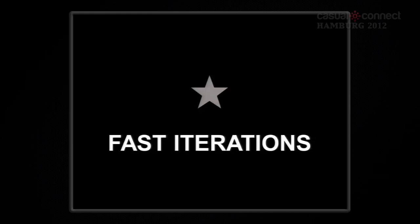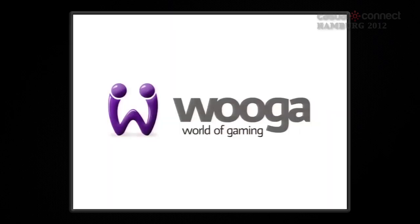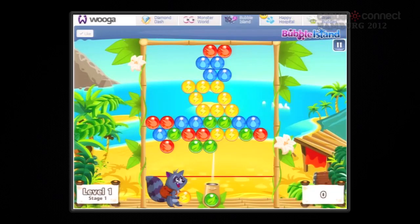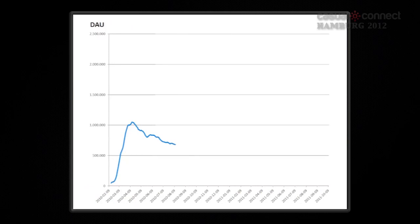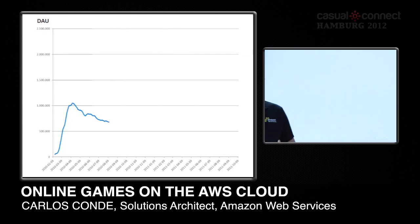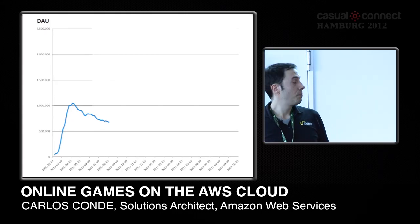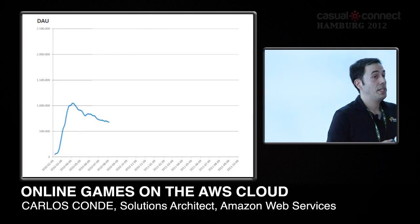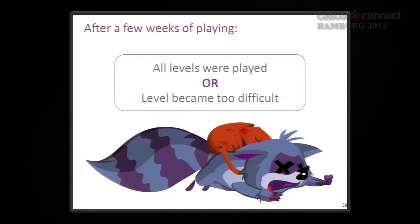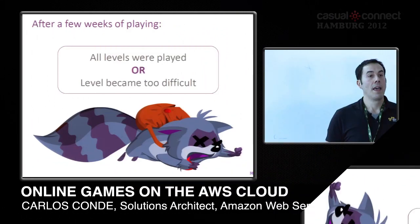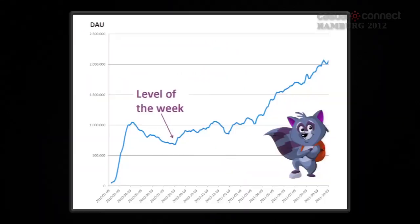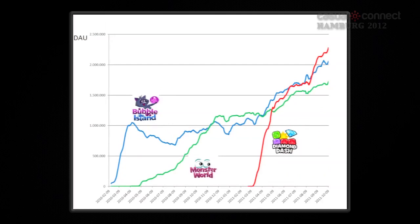Another important point is being able to do fast iterations. Wooga, a German company, launched a game called Bubble Island. After a few months they had over one million players, but then saw a classic pattern: a constant decrease in player count. By analyzing the logs they found players had either completed all levels or found them too difficult. They brainstormed and came up with "level of the week" — a completely new level each week — and this approach has been very successful across all their games.